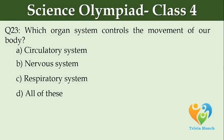Which organ system controls the movement of our body? Option A: circulatory system. Option B: nervous system. Option C: respiratory system. Option D: all of these.